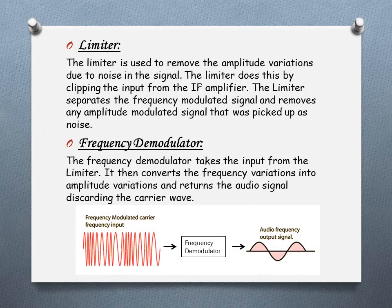The first remaining part is the limiter. The limiter is used to remove amplitude variations due to noise in the signal. If there is noise in the signal, it gets amplified by the RF amplifier, resulting in amplitude variations. The limiter cuts these amplitude variations using a clipper circuit, clipping the input from the IF amplifier. The limiter separates the frequency modulated signal and removes any amplitude modulated signal that was picked up as noise.